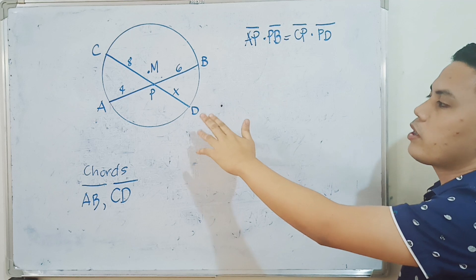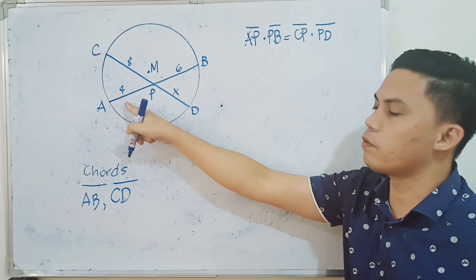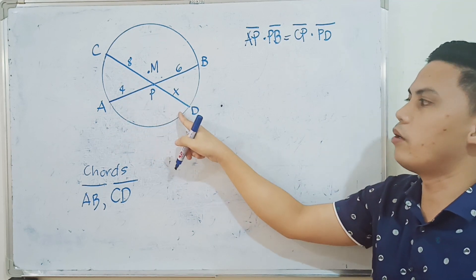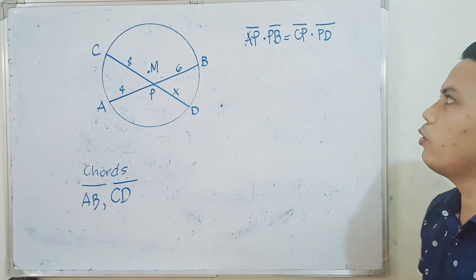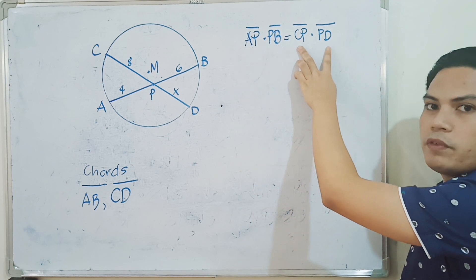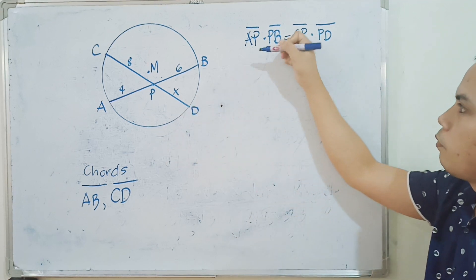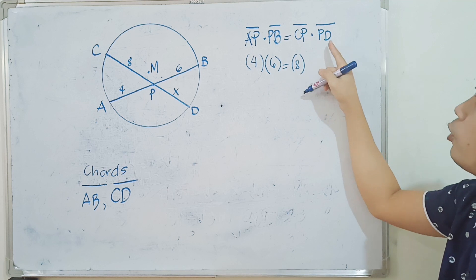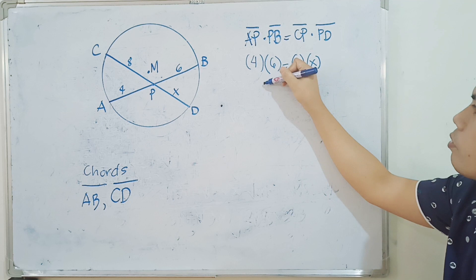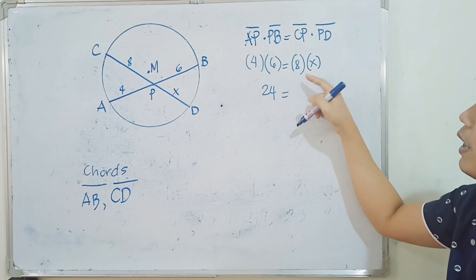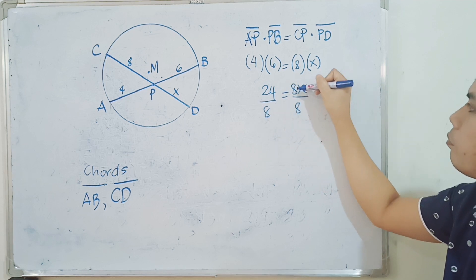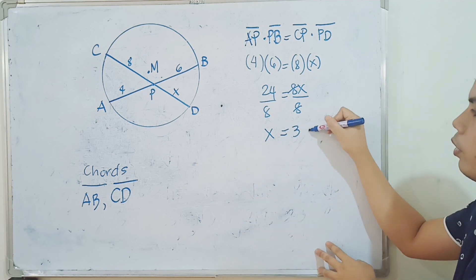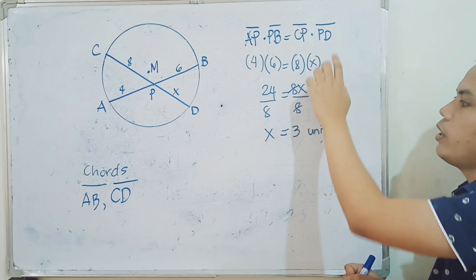If we assign values to each segment, let's solve for X. AP is 4 units, PB is 6 units, and CP is 8 units. What is the length of segment PD? Based on the theorem, multiply the segments of each chord and equate their products. So: 4 times 6 equals 8 times X. That gives us 24 equals 8X. Dividing both sides by 8, X equals 24 divided by 8, which equals 3 units. So segment PD is equal to 3 units.